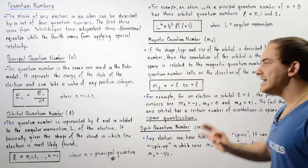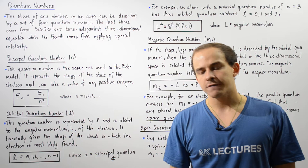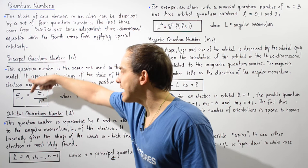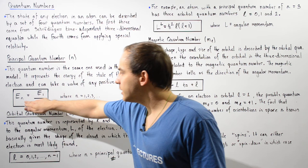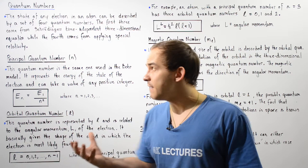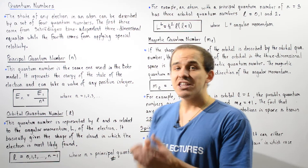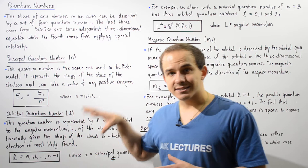The principal quantum number can take a value that is any positive integer, so n can equal 1, 2, 3, 4, 5, and so on. If we know the principal quantum number of our electron and we know the energy of the electron found in principal quantum number n equals 1, then we can use this equation to calculate the energy of the electron found within the nth principal quantum number.